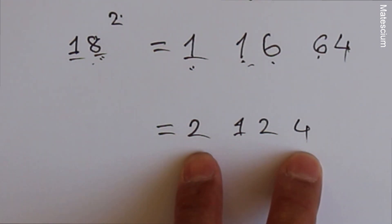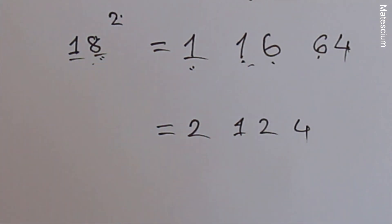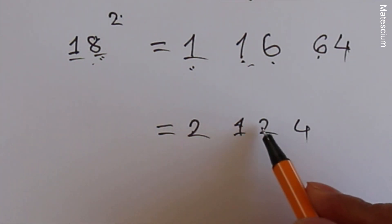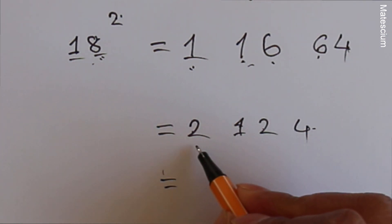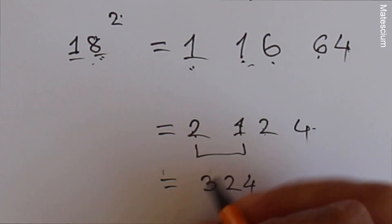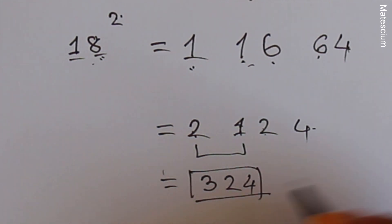We have to work out again until it's reduced to 3 digits. Still now it has four digits. So we have to add again this first 2 values. 2 plus 1 is 3. This 2 remaining here, 4 remaining here. Now it is the answer. 324 is the answer.